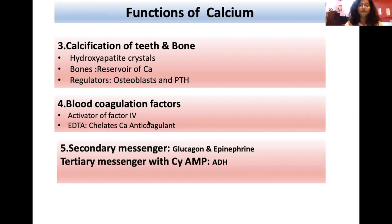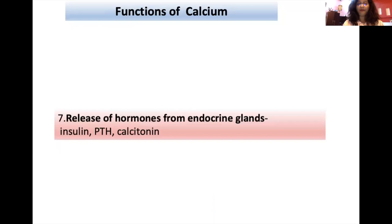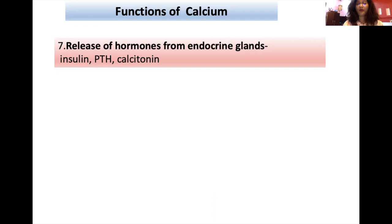Calcium acts as a secondary messenger, mostly in the inositol triphosphate and diacylglycerol pathway, and acts as a secondary messenger for glucagon and epinephrine. It acts as a tertiary messenger with cyclic AMP, and the hormone it acts on in this capacity is ADH — antidiuretic hormone. Calcium also plays an important role in nerve conduction, releasing neurotransmitters at presynaptic and postsynaptic terminals. It also helps in the release of hormones from endocrine glands, like insulin, parathormone, and calcitonin.